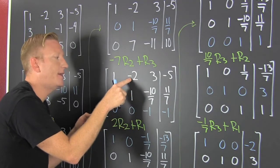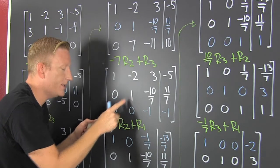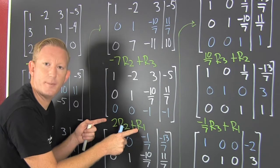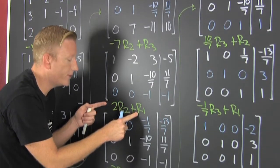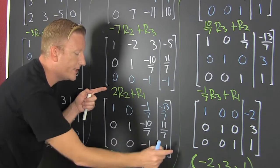Now I need to kill that minus 2. So I multiply the 1 by a 2. So 2 times row 2 plus row 1. Recopy all the rows that aren't changing. The only row that's changing is row 1. So I recopy row 2. I recopy row 3.